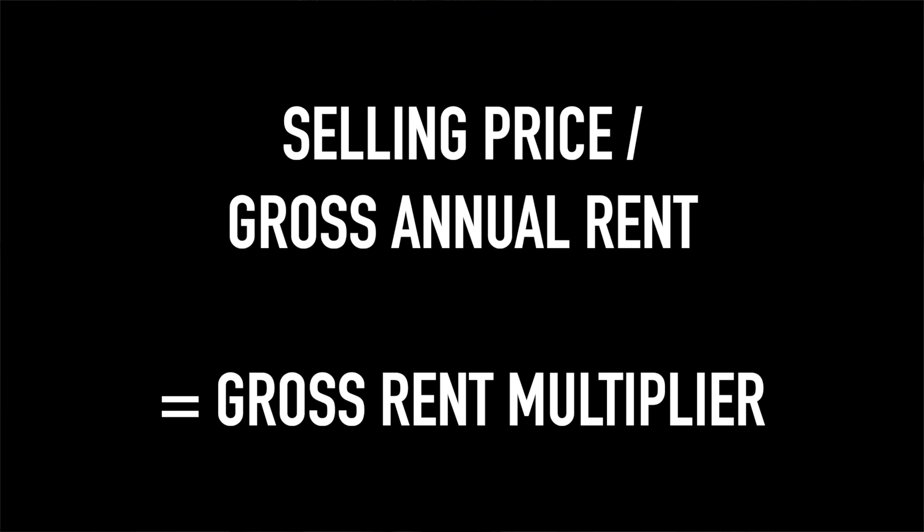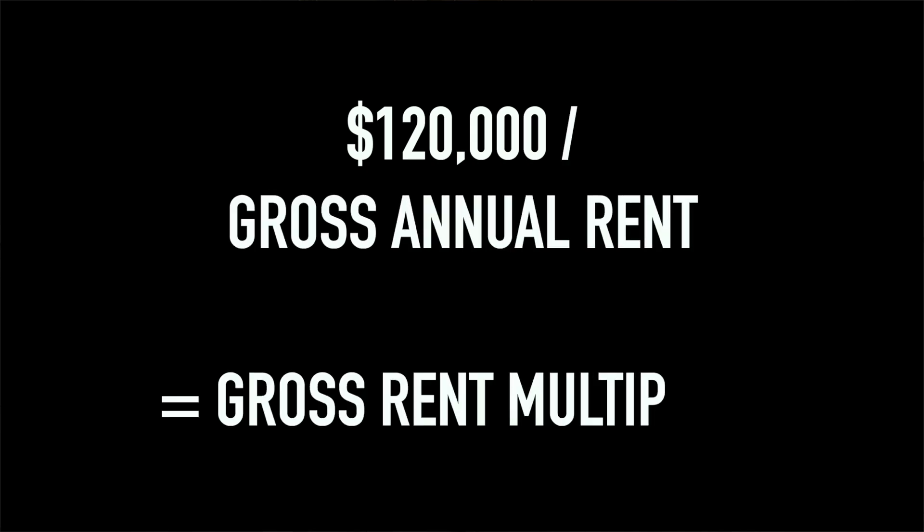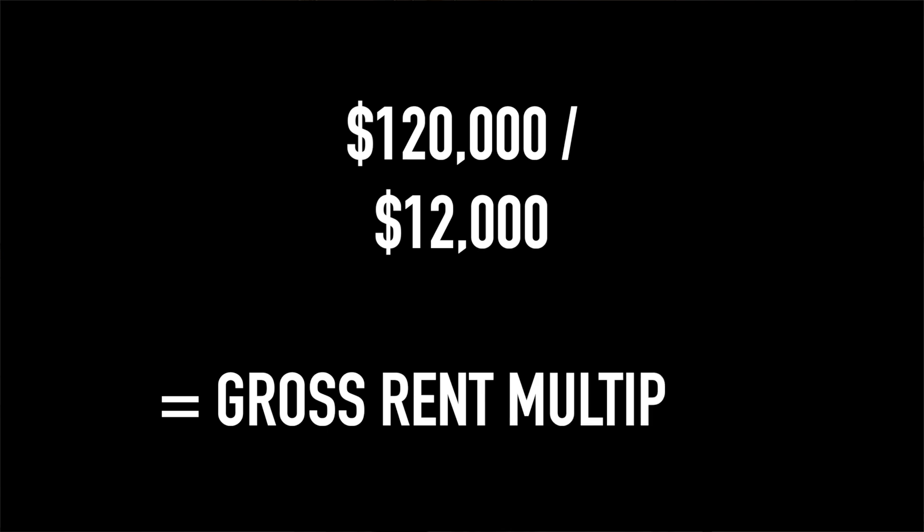You have your selling price and your gross annual rent. Now you're going to divide the selling price by the gross annual rent. So let's say the selling price of a house is $120,000 and the gross annual rent is $12,000 — you're going to divide those by each other.